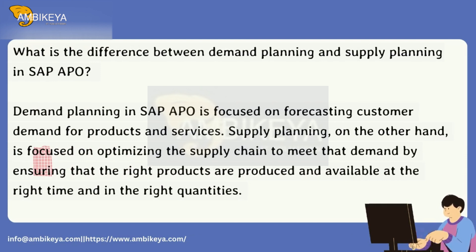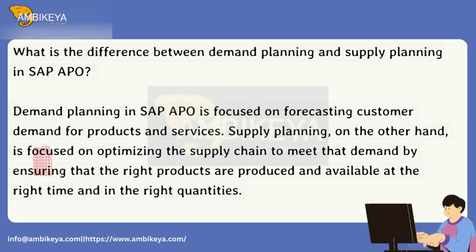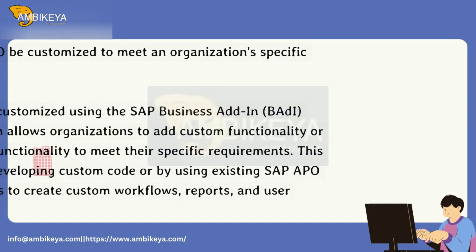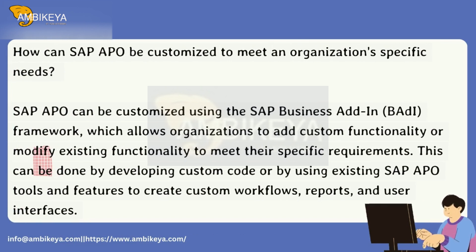What is the difference between Demand Planning and Supply Planning in SAP APO? Demand Planning in SAP APO is focused on forecasting customer demand for products and services. Supply Planning, on the other hand, is focused on optimizing the supply chain to meet that demand by ensuring that the right products are produced and available at the right time and in the right quantities.